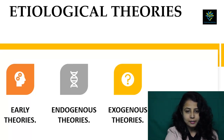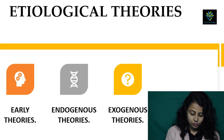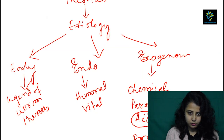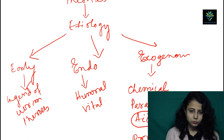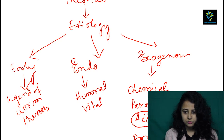By now you all know about the definition of caries. Coming to the theories, you can divide them broadly as etiological theories: first, early theories; second, endogenous theories; and third, exogenous theories.